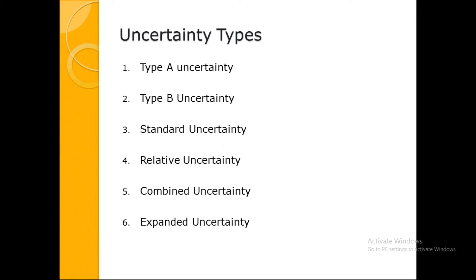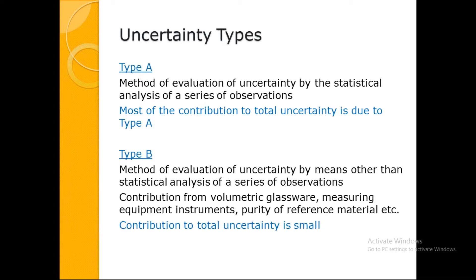There are Type A and Type B uncertainties, standard uncertainty, relative uncertainty, combined uncertainty, and expanded uncertainty. Type A is the method of evaluation by statistical analysis of a series of observations — like the chloride analysis where we took multiple readings. Whatever uncertainty we obtain from performing multiple readings will be called Type A uncertainty. Most of the contribution to total uncertainty actually comes from Type A.